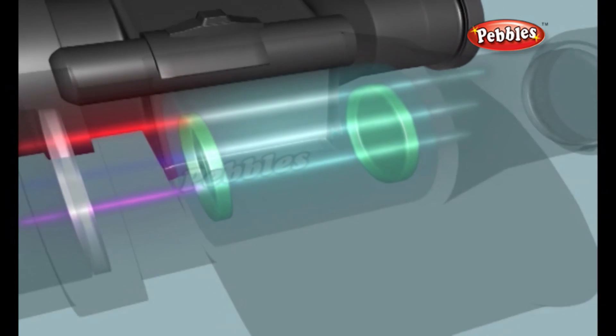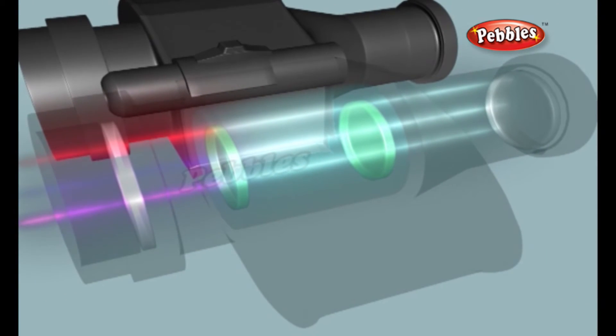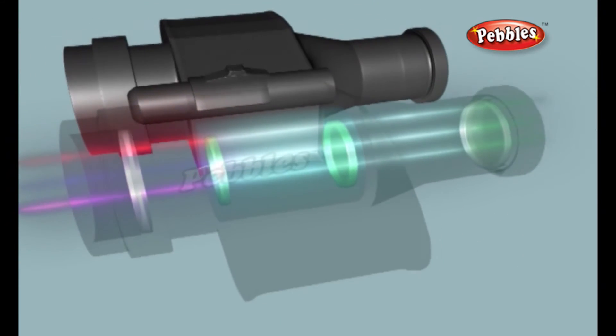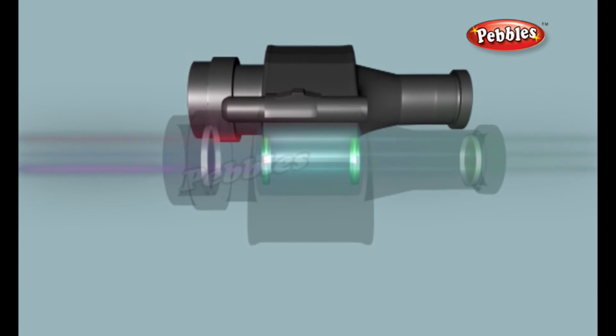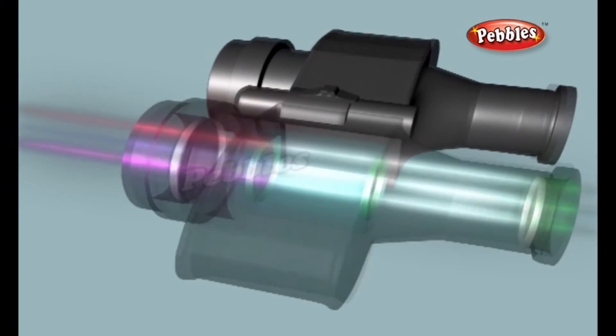The electrons are amplified and then fired at a screen coated with phosphor chemicals like the screen on an old-fashioned television. As the electrons hit the phosphor, they create tiny flashes of light. Since there are many more photons than originally entered the goggles, the screen makes a much brighter version of the original scene.